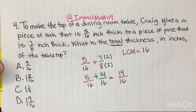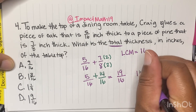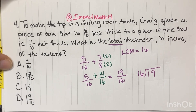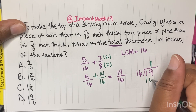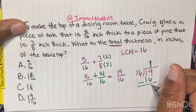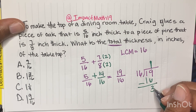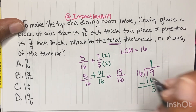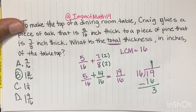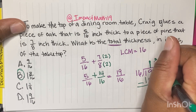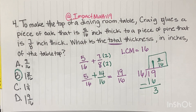Now let's change 19 over 16 to a mixed number. We do 16 into 19 and ask ourselves how many 16s fit into 19. 1 sixteen fits. 1 times 16 is 16, and 19 minus 16 gives us 3. Hopefully you're looking at your answer choices — you could just go to B and that's your answer. But we write it as 1 and 3 sixteenths. This is our total thickness.